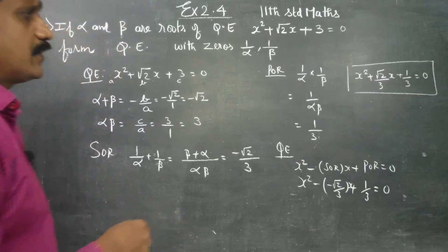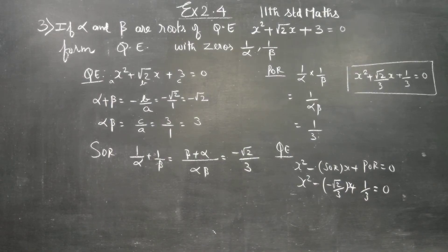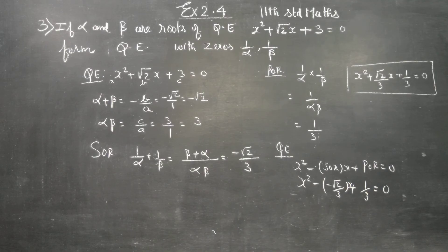If you want, you can multiply all terms by 3 to clear the fractions. Multiplying through by 3 gives 3x squared plus root 2 x plus 1 equals 0. That is the final quadratic equation. This is a quadratic equation. Thank you.